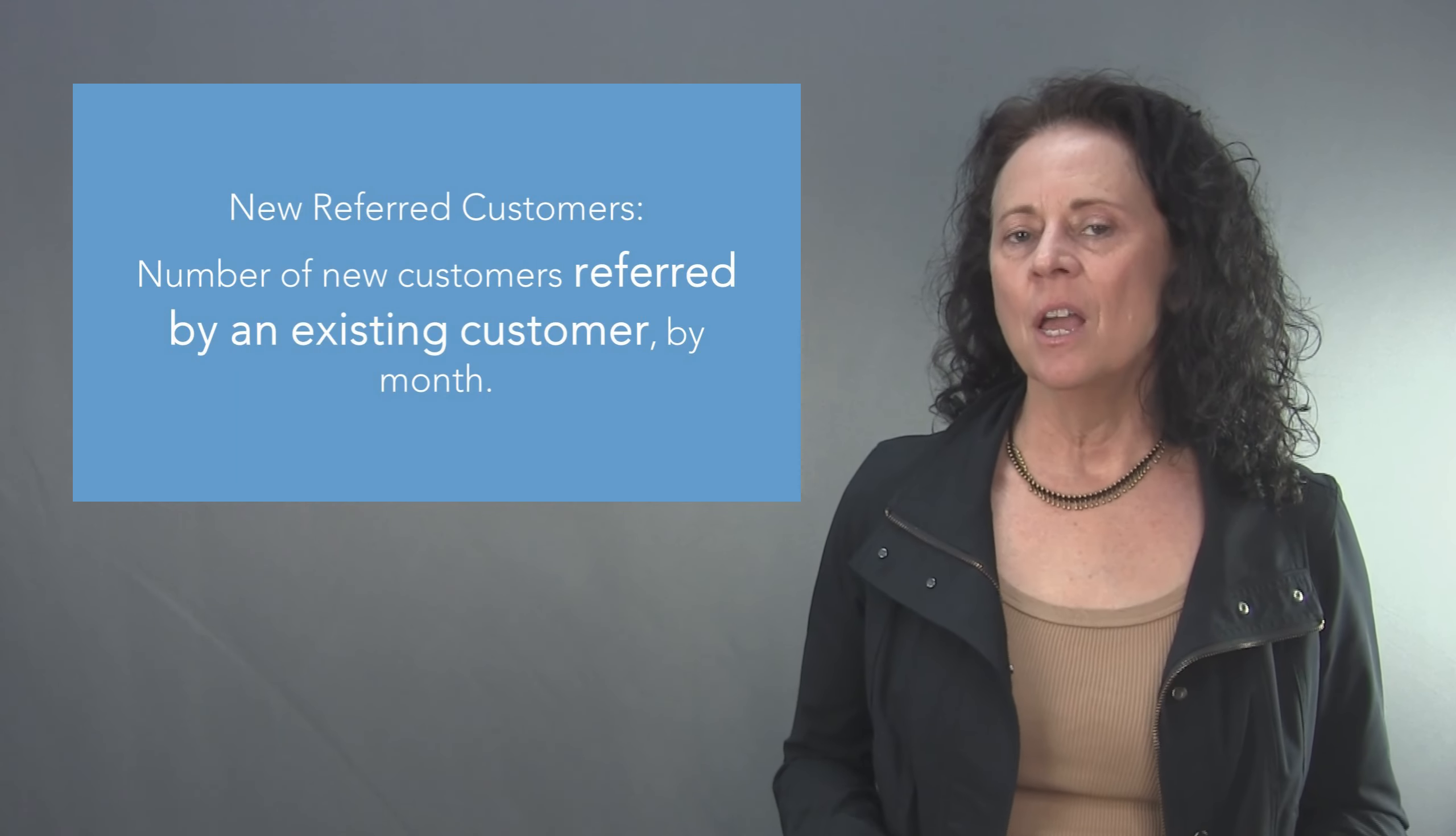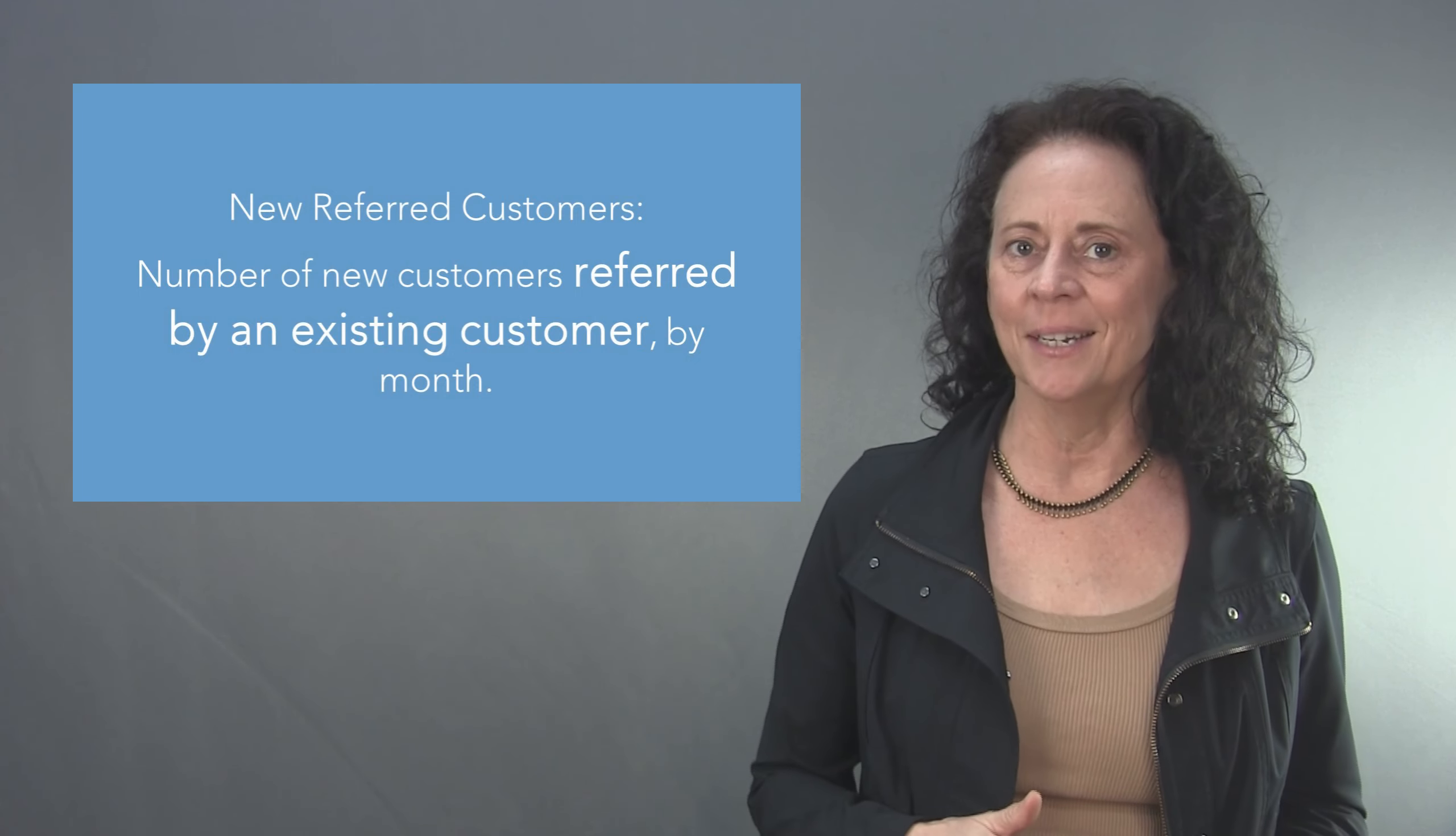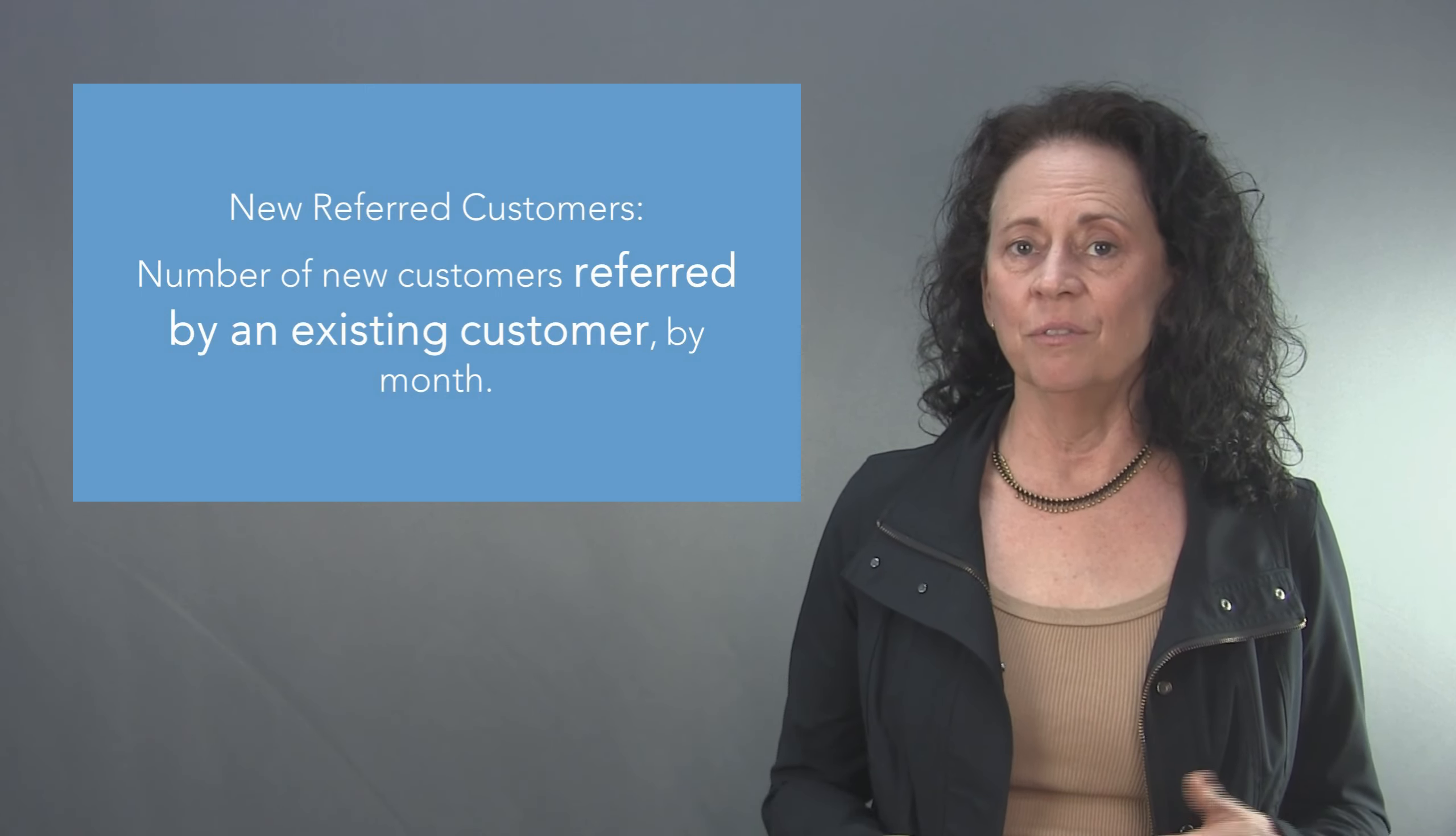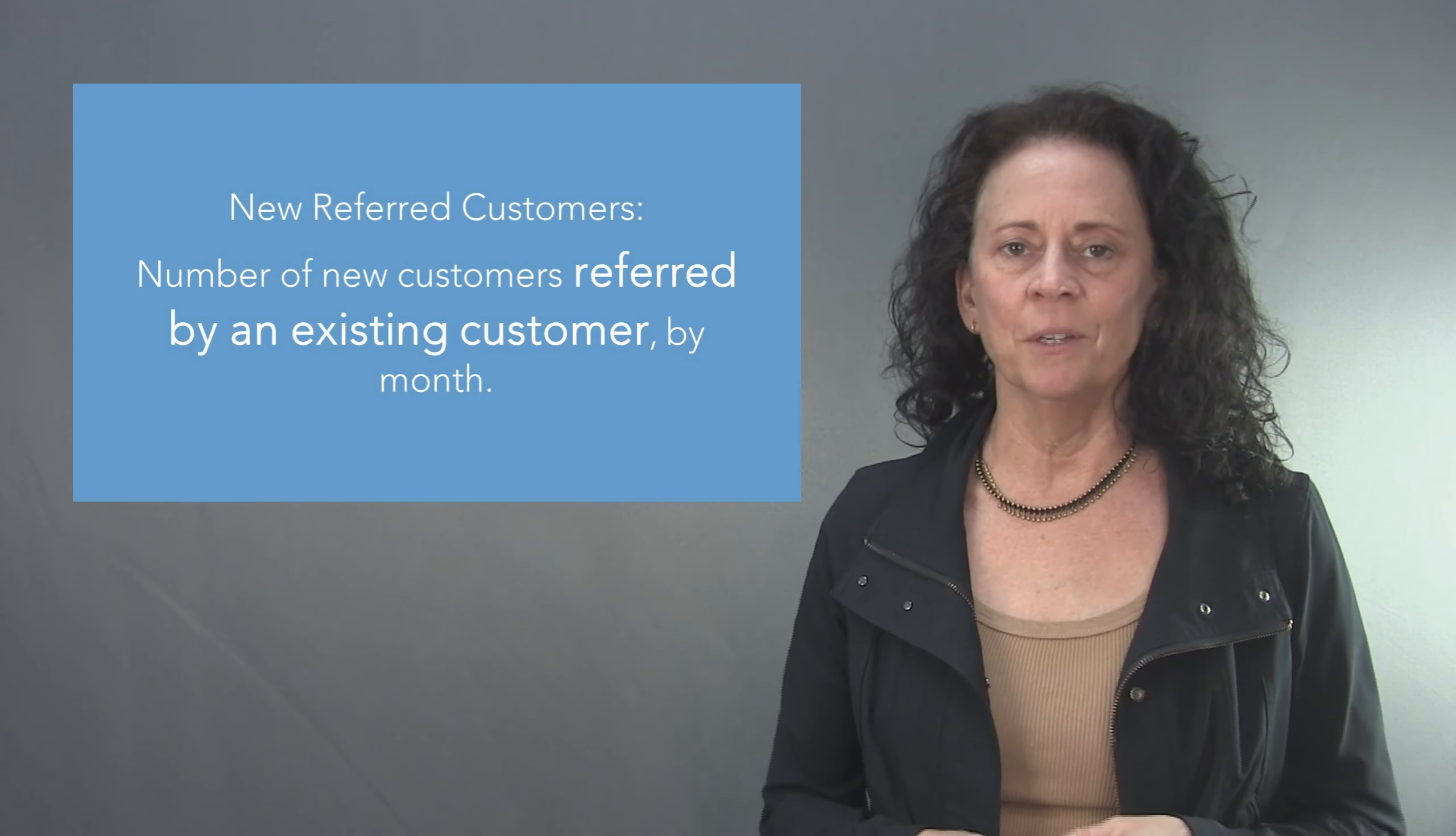In this measure description the scope data item is referred by an existing customer. So again, new referred customers is the measure: the number of new customers referred by an existing customer by month. You can imagine in a data set of all customers that there might be a field that flags how the customers found out about the company. And one of the values of this field could be existing customer. Other values might be web search or TV advertisement or social media, that kind of thing.